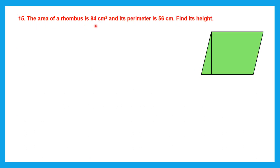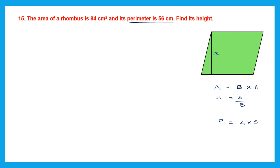Question 15: the area of a rhombus is 84 centimeters square and its perimeter is 56 centimeters. Find its height. To find the height, the formula is area equals base into height, so height equals area divided by base. Area is given but the base is not. We'll use the perimeter formula — 4 into side — to find the side, which we can then use as the base.